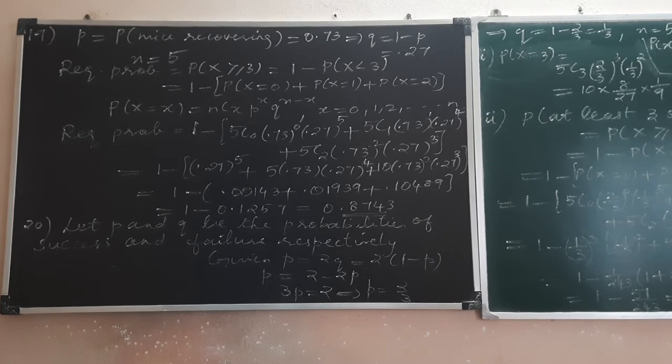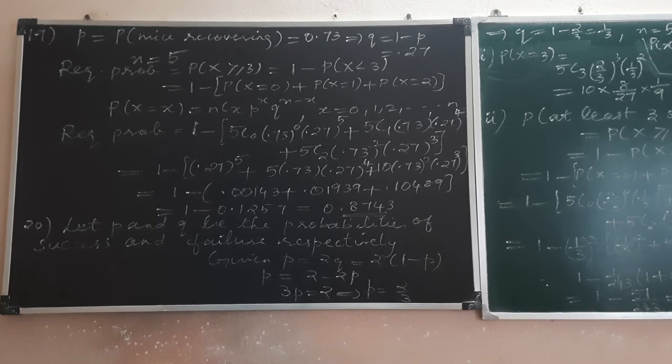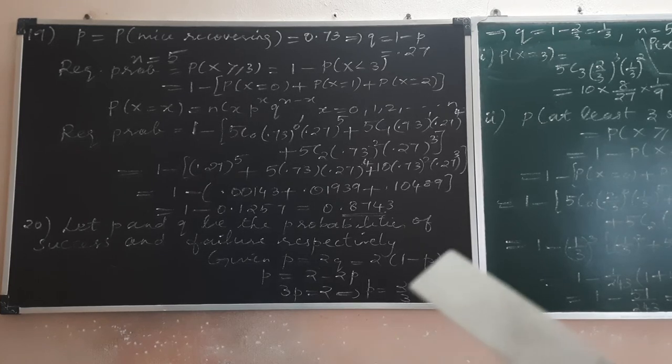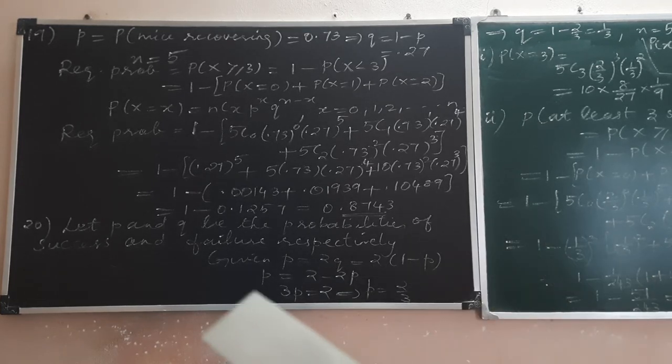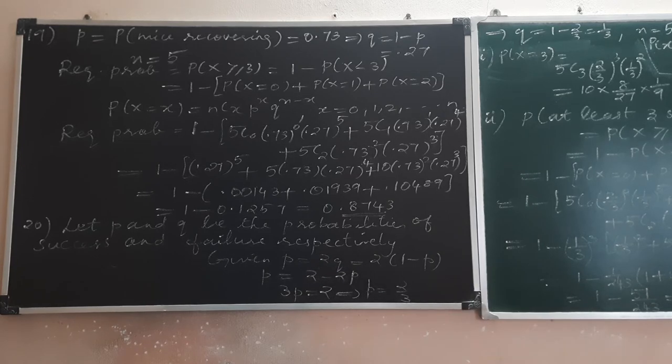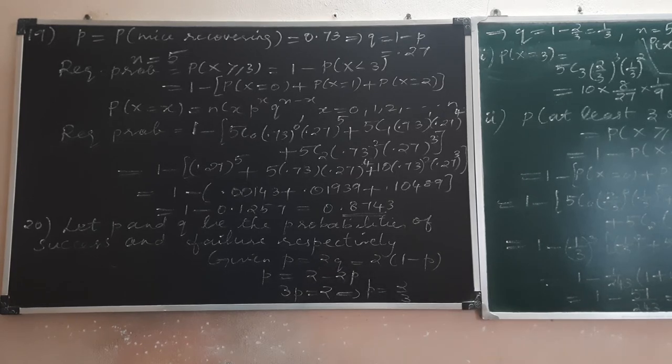One experiment is performed and it is observed that the probability of success is 2 times probability of failure. P is equal to 2Q. We can substitute Q equals 1-P, or P equals 1-Q to eliminate one variable.